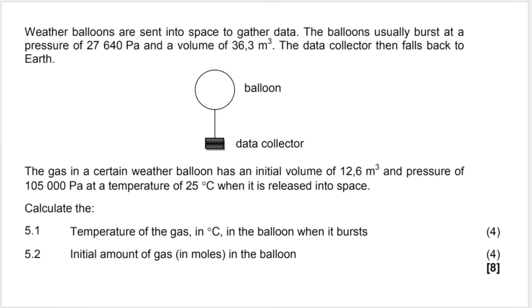I also remind you how to convert between different units for temperature. In our first question, weather balloons are sent into space to gather data. The balloons usually burst at a pressure of 27,640 Pa and a volume of 36.3 m³. The data collector then falls back to earth. So what they're doing in this question is setting up a scenario giving me pressure information and volume information. Then they carry on by saying the gas in a certain weather balloon has an initial volume of 12.6 meters cubed.